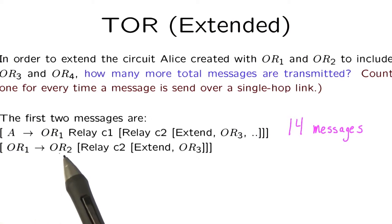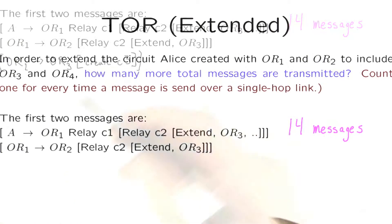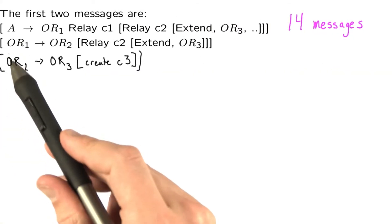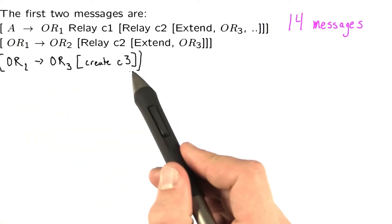Then OnionRouter1 tells OnionRouter2 to extend to OnionRouter3. In the third message, OnionRouter2 tells OnionRouter3 to create a circuit.